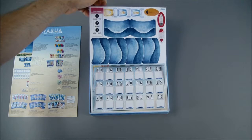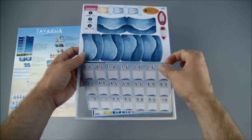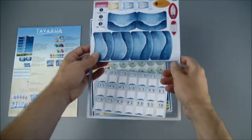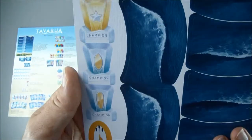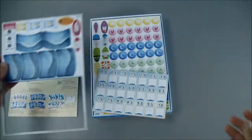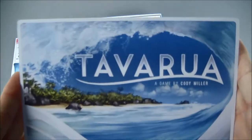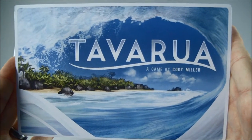Right on top we have punchboard. The larger portion is coming right out. We have the double-sided game board, a game by Cody Miller.